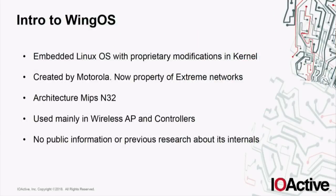So what the hell is Wing OS? Basically it's an embedded Linux operating system with its own proprietary stuff in the kernel — their own proprietary drivers, their own proprietary socket address family and stuff like that. Originally it was created by Motorola, but now it's property of Extreme Networks. The architecture is MIPS N32, at least the devices I've been working with during this research. As far as I know, there is no public information or previous research and reported vulnerabilities about this OS.